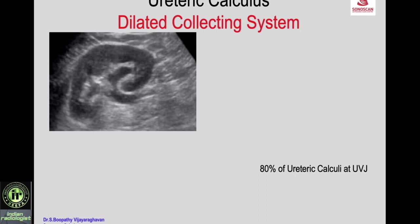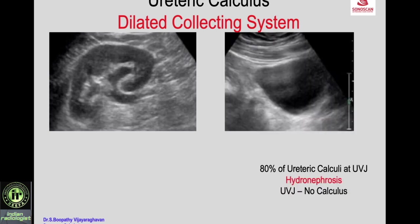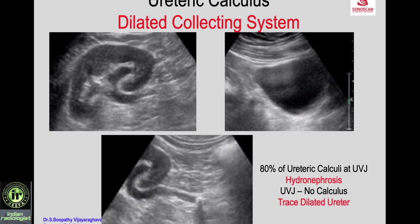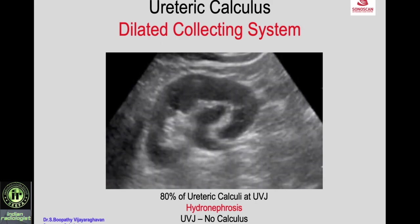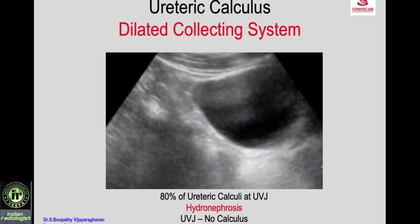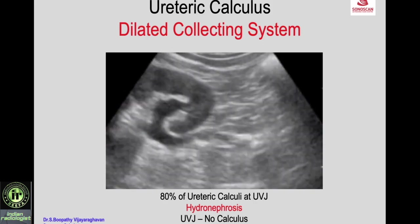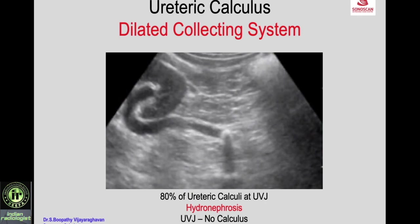Once you see hydronephrosis in a patient with colic, you immediately go to the ureterovesical junction and the lower ureter. Here it is not dilated, so you come back and trace the ureter and see the calculus in the upper ureter — actually at the junction of the upper and mid ureter. That is the protocol. You see dilatation of the pelvicalyceal system, go to the lower ureter, find no calculus there, then trace the ureter and find the calculus in the mid ureter.